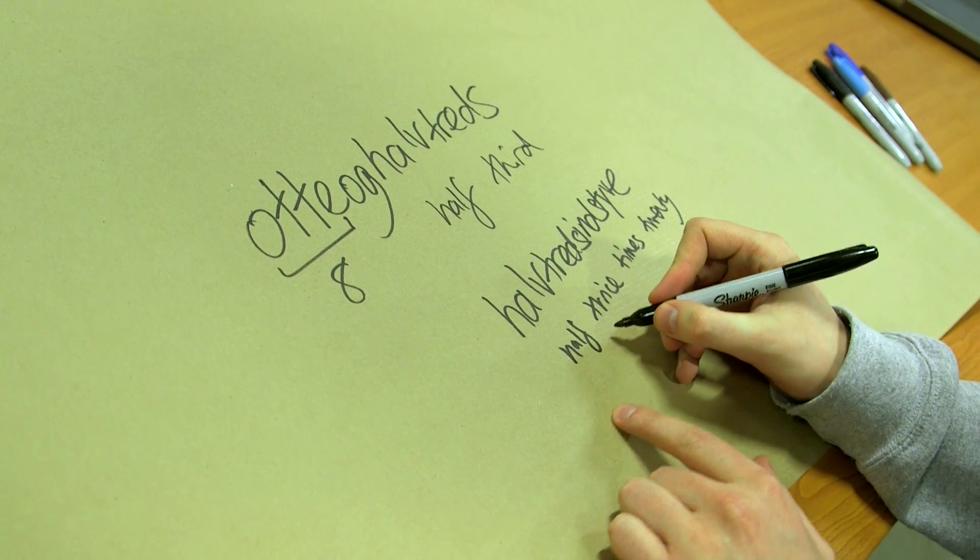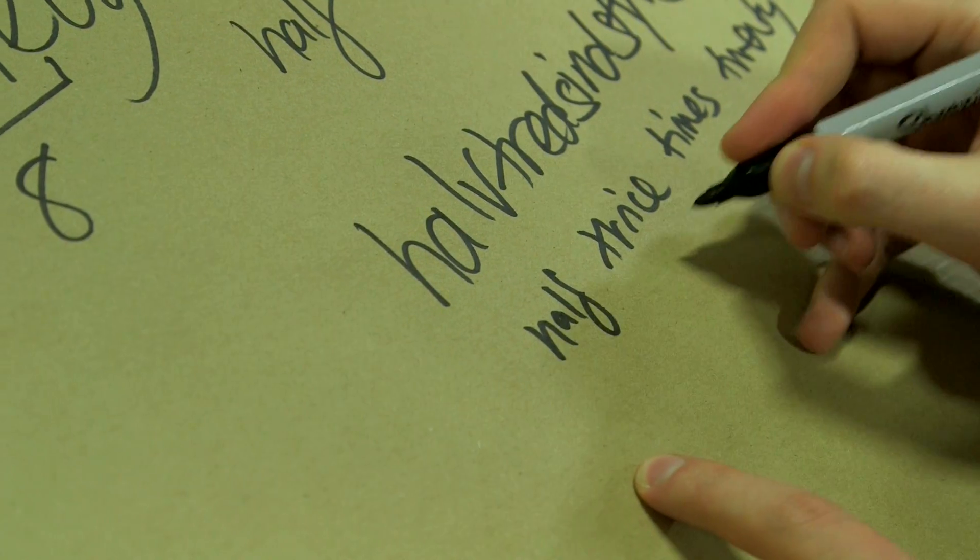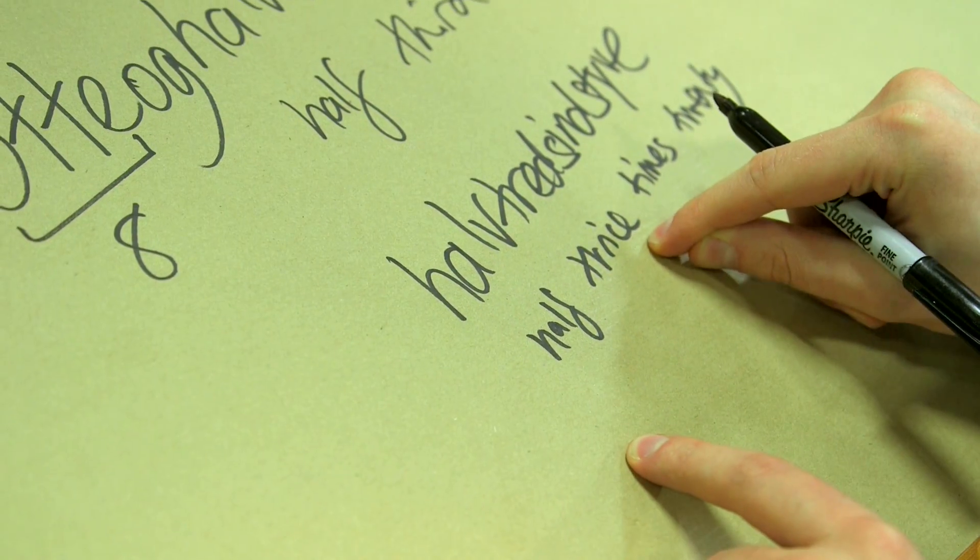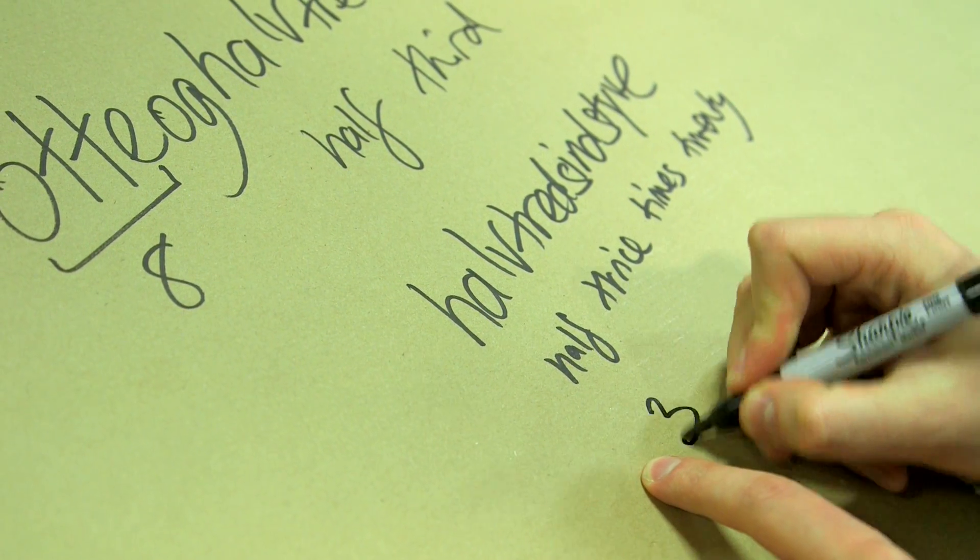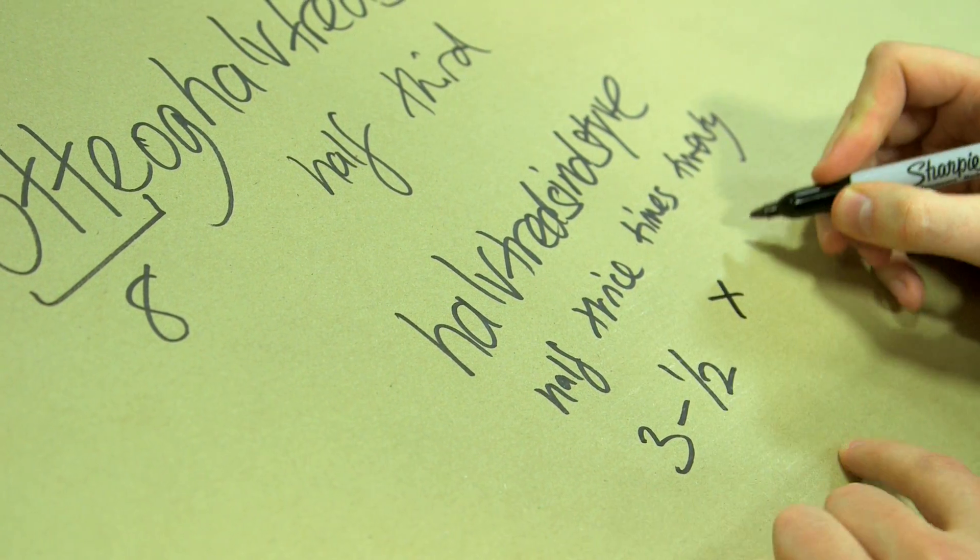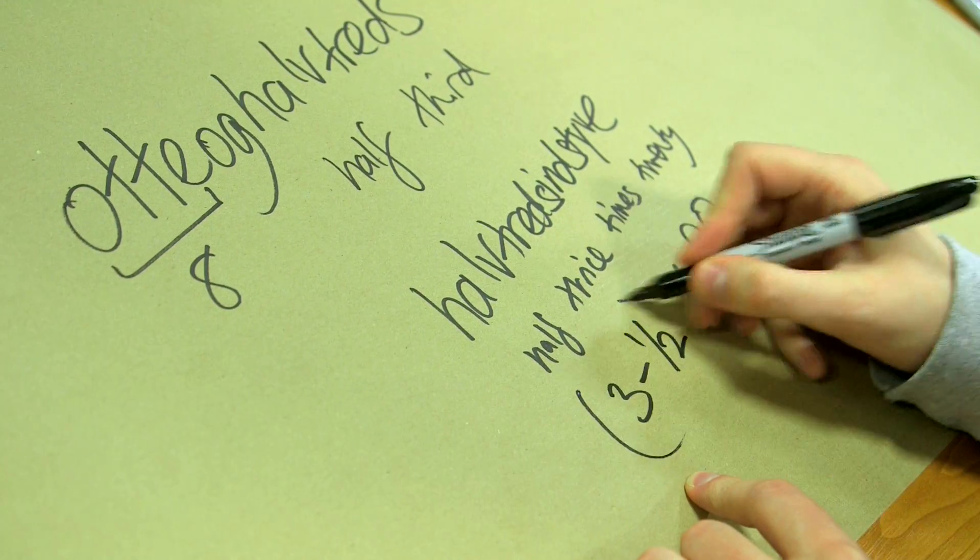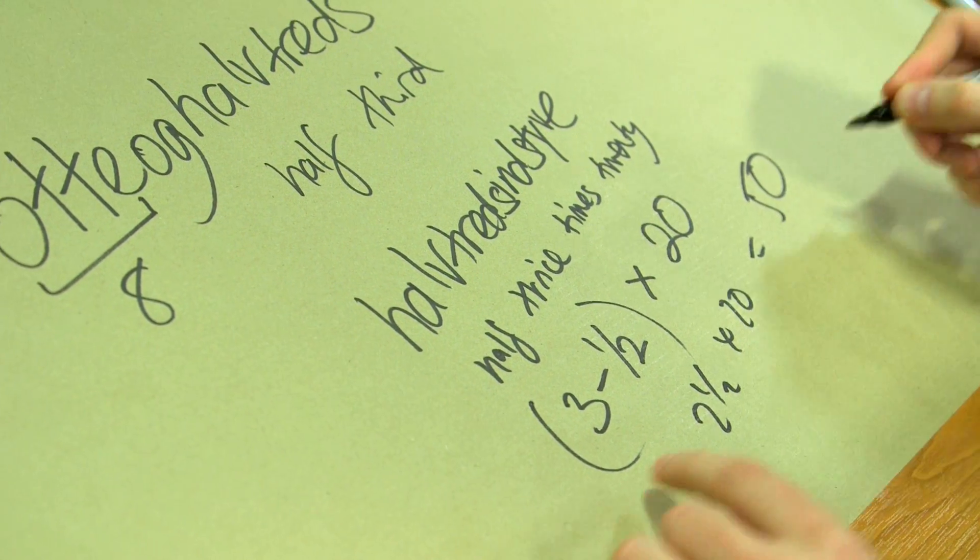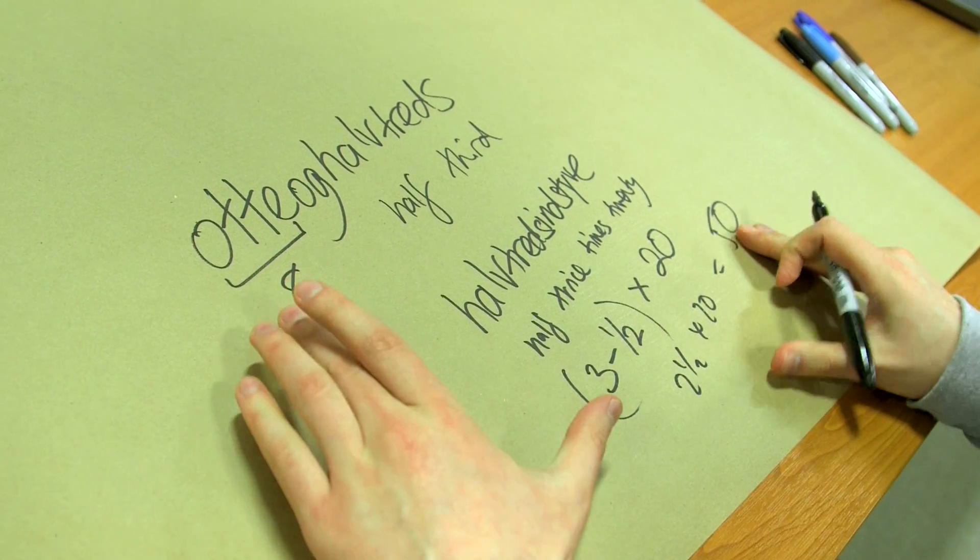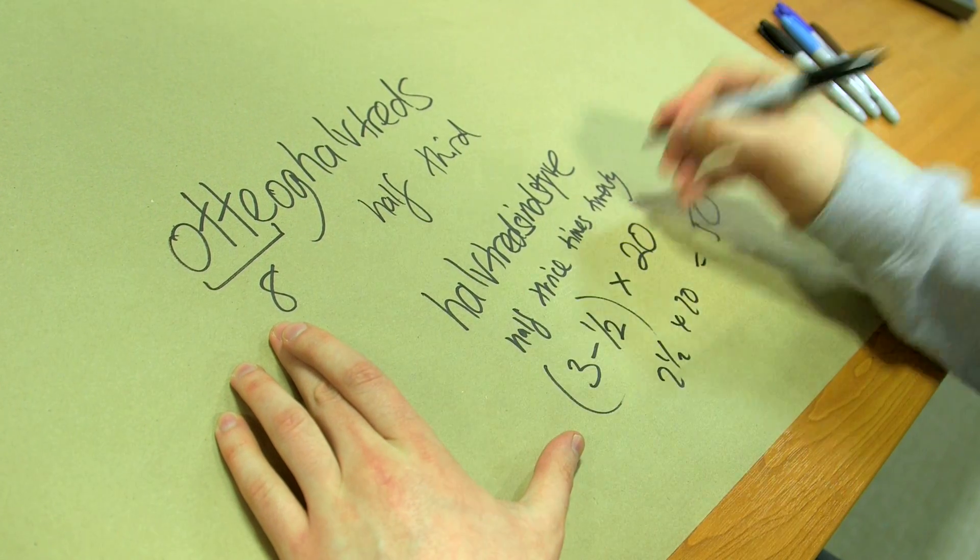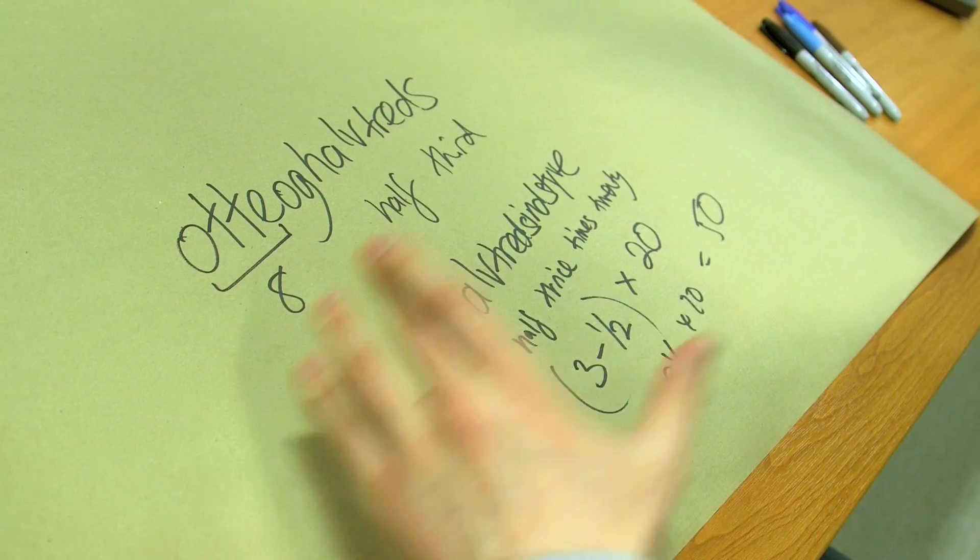Because this bit here, half thrice, is like Roman numerals. What you've got there is half away from thrice. So this literally means 3 minus a half times 20, which if you actually do the math, it's 2 and a half times 20, which is 50. So you finally have 58. You have half thrice, 2 and a half times 20, plus 8, 58.